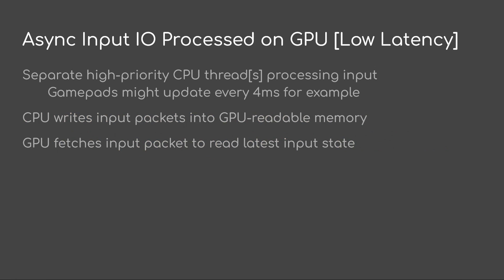So the way this works: asynchronous input IO is processed on the GPU at low latency. We have separate high priority CPU threads — maybe one or more depending on what you're pulling, like from keyboard, mouse, or whatever — processing input. For example, game pads might be updating every four milliseconds. The CPU writes the input packets into GPU readable memory and the GPU fetches the input packet to read the latest input state.